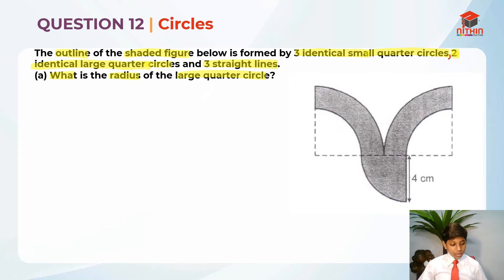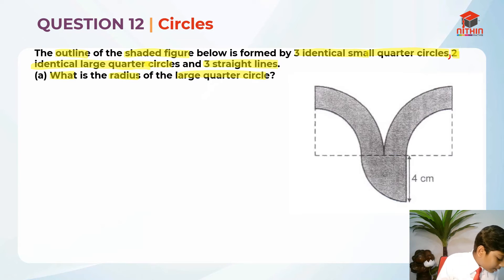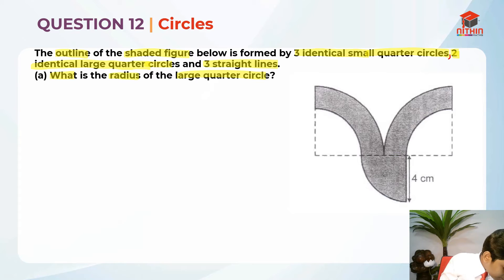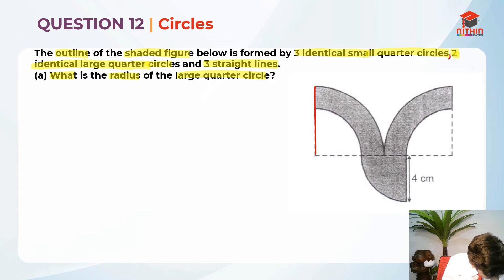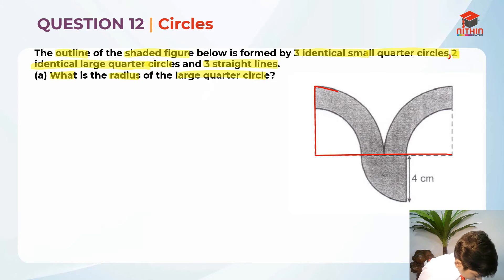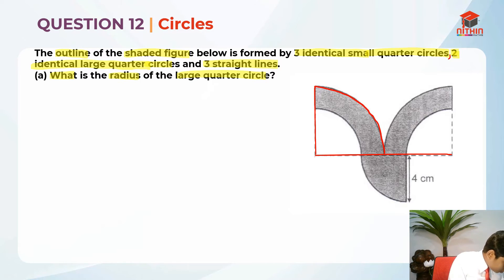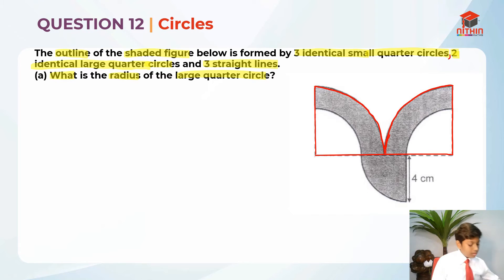Let me get some things straight here. I'm going to show you where the large quarter circle is. The large quarter circle is basically this quarter circle here. And since there are two identical ones, let me draw both of them. So this is one of the large quarter circles, and this is the other one. So these are the two large quarter circles.